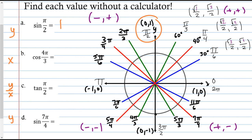Part B: cosine of 4 pi over 3. I find 4 pi over 3 on the unit circle. The 3 in the denominator tells me it's associated with the 60-degree angle, so the x-coordinate is 1/2. But 4 pi over 3 is in the third quadrant, where everything is negative, so the answer is −1/2. Part C: tangent of pi over 2 is y over x, which is 1 over 0 — undefined, since we don't divide by zero. Part D: sine of 7 pi over 4. Pi over 4 coordinates are √2 over 2, but 7 pi over 4 is in the fourth quadrant where y's are negative, so the answer is −√2 over 2.